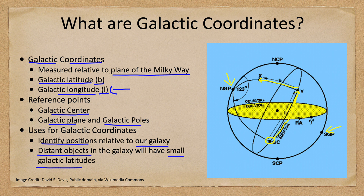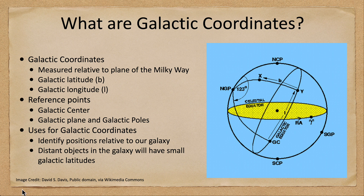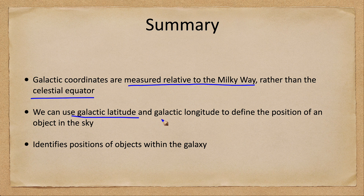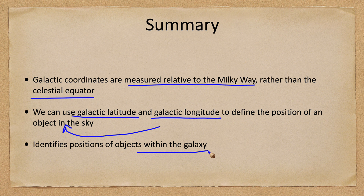What we've looked at today is galactic coordinates. We saw that they are measured relative to the Milky Way, not the celestial equator as we used previously. We can use galactic latitude and longitude to determine the position of an object in the sky, just like we did with right ascension and declination, or altitude and azimuth, and other coordinate systems. It identifies generally the positions of objects within the galaxy or relative to the plane of the galaxy itself.